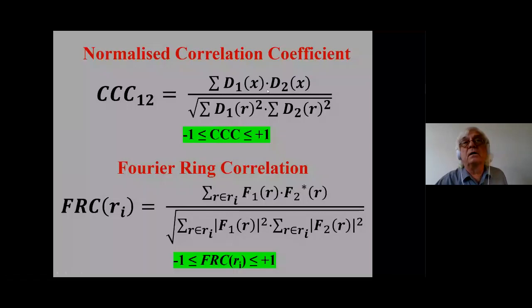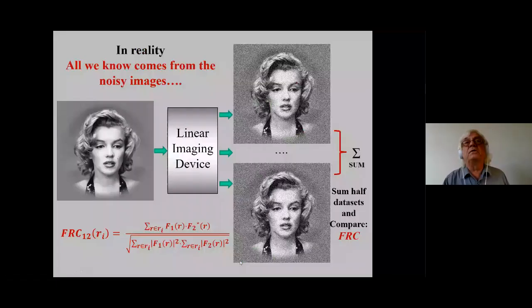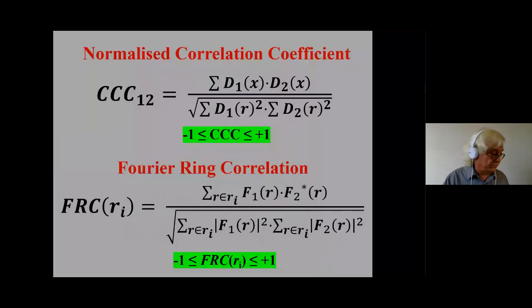So we compare sums of half datasets and can do that with the Fourier ring correlation. Here's the Fourier ring correlation — the two-dimensional version from 1982, and the three-dimensional came a bit later. We do the correlation between two rings in Fourier space, and this gives you then the Fourier ring correlation curve, which is the standard thing that everybody uses today. The big advantage is that this is also between minus one and plus one, just like the normalized cross-correlation coefficient, and these structure factors in Fourier space can be integrated around the ring due to Hermitian symmetry, giving real normalized cross-correlation coefficients.